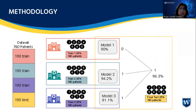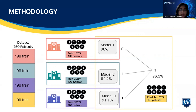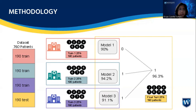Here we have 760 patient records, randomly distributed and divided into four groups, with 190 records trained by Clinic A to test the features mentioned earlier, 190 records going to Clinic B, and another 190 going to Clinic C. Model 1 from Clinic A has a 90% accuracy, Clinic B's Model 2 has 94.2% accuracy, and Clinic C's Model 3 has 91.1% accuracy.